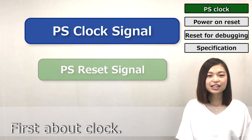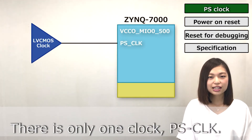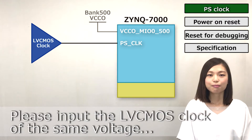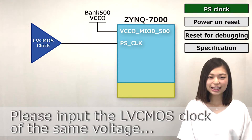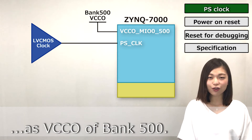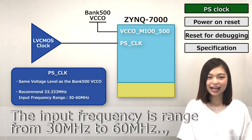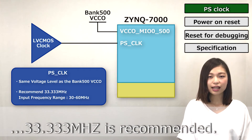First, about the clock. There is only one clock: the PS clock. Please input the LVCMOS clock of the same voltage as VCCO of bank 500. The input frequency is ranged from 30 MHz to 60 MHz. 33.333 MHz is recommended.